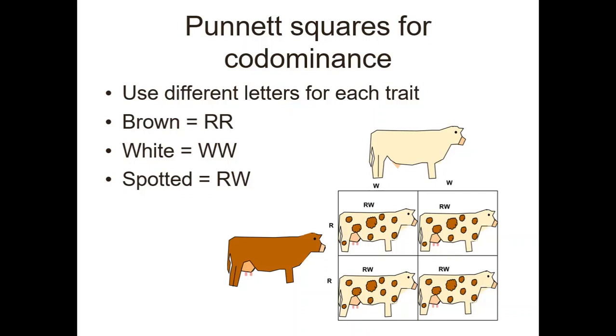So just remember: co-dominance means they both are dominant — the alleles that are being passed down — so they are both going to show up.